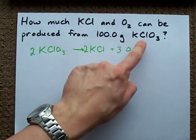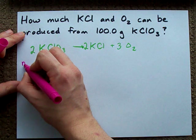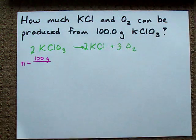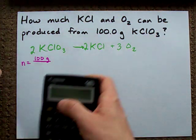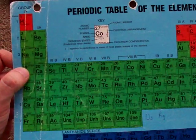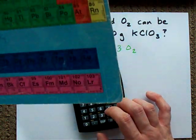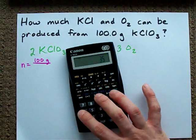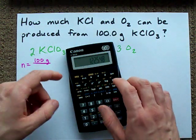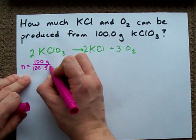We start with 100 grams of KClO3. How many moles is that? Well, the number of moles is the mass divided by the molar mass. Now, I don't know the molar mass of potassium chlorate right off the bat, but I can figure it out by adding up the molar mass of potassium, that's 39.098, with the molar mass of chlorine, that's 35.45, and 3 oxygens, which gives you 122.5 grams per mole.